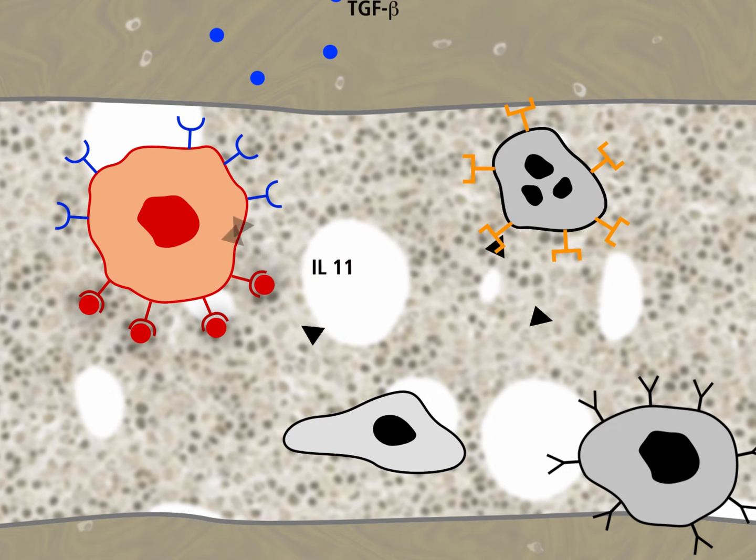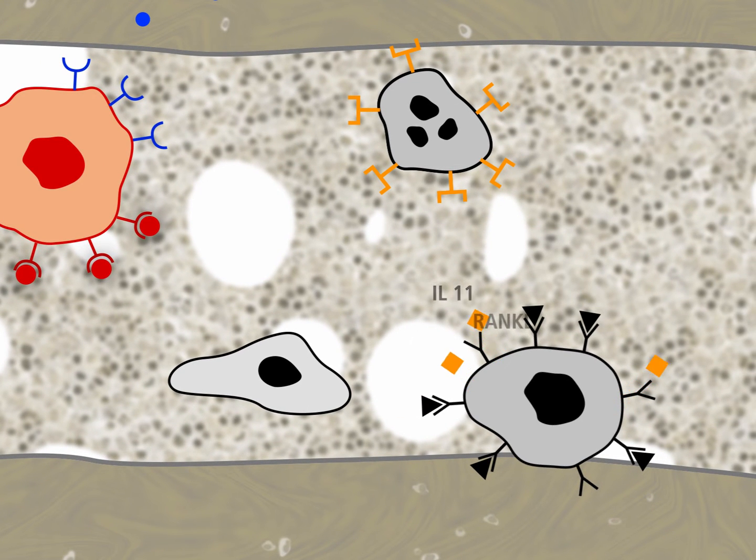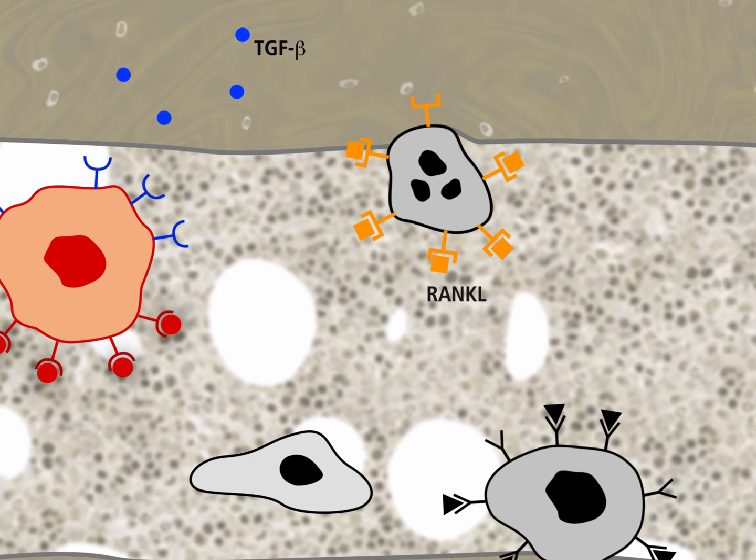Interleukin-11 binds to its receptors on osteoblasts and stimulates the release of RANK ligand. The receptor of RANK ligand is RANK, present on osteoclast precursors. After binding of RANK ligand to RANK, the precursor cells differentiate into mature osteoclasts.